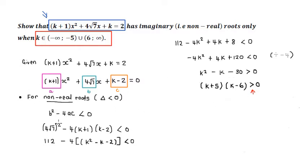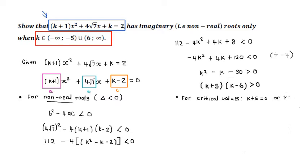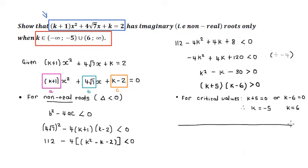To get those range of answers, we need to find the critical values. For critical values, that happens when these two brackets equal zero: K plus 5 equals zero, or K minus 6 equals zero. Therefore, the first critical value is K equals negative 5, and the other is K equals 6. We jot these on a number line — or draw a sketch — because these critical values are the x-intercepts of the quadratic function K squared minus K minus 30.